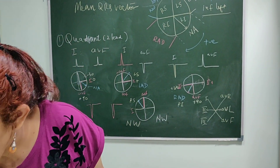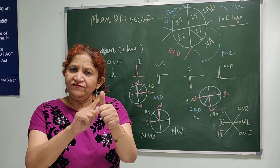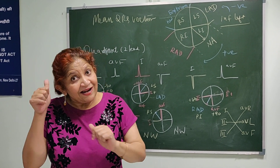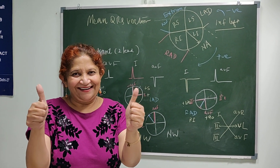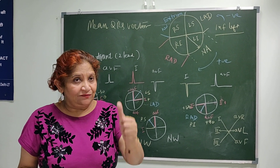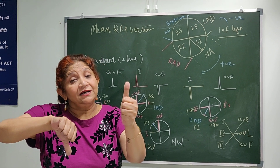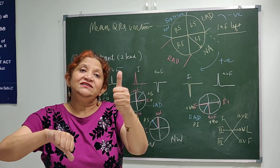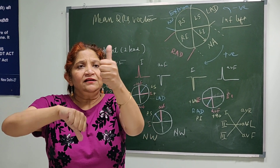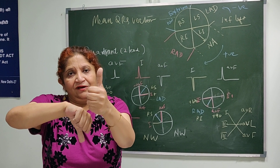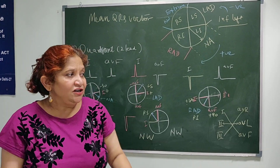There is a very simple clinical tool using your thumbs. Your left thumb represents Lead 1 and your right thumb represents AVF. If both are up — both positive — that is a normal axis. If Lead 1 is positive (left thumb up) and AVF is negative (right thumb down), it is left axis deviation — they are 'leaving' apart like this. So 'left leaves' is the mnemonic for left axis deviation.